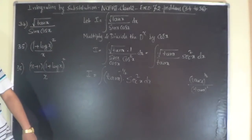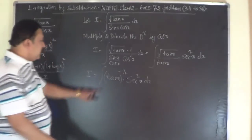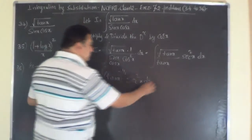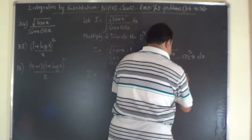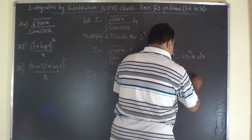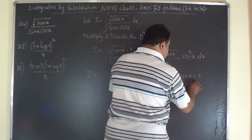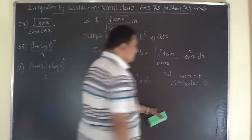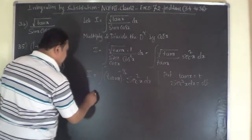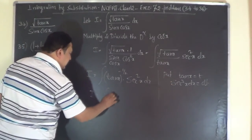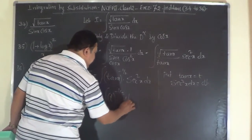Now we make the substitution. Put tan x equals t. Differentiating, sec²x dx equals dt. Replacing sec²x dx by dt, i becomes the integral of t to the power of minus half dt.